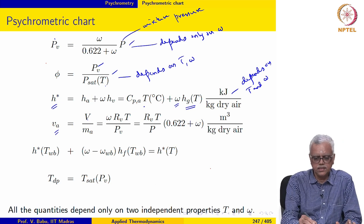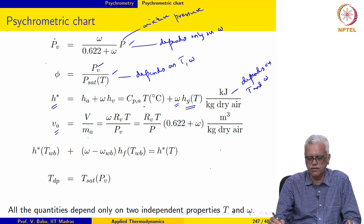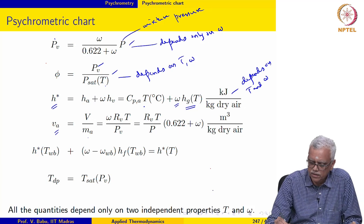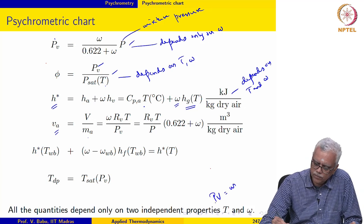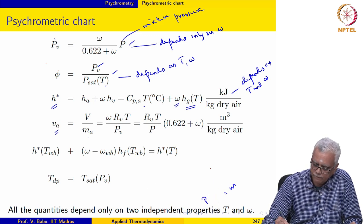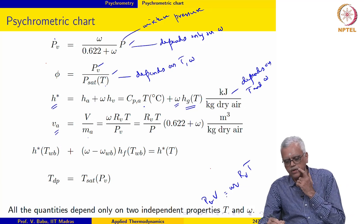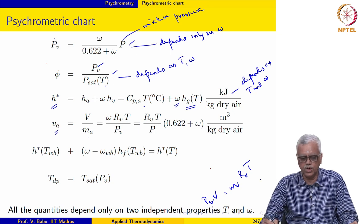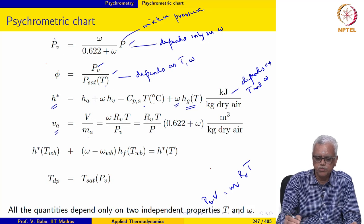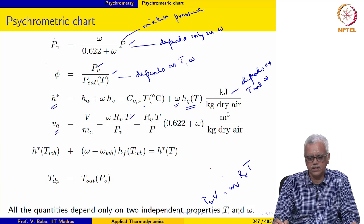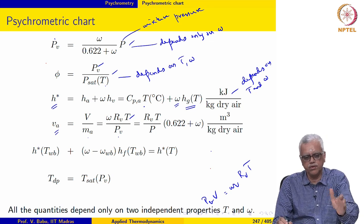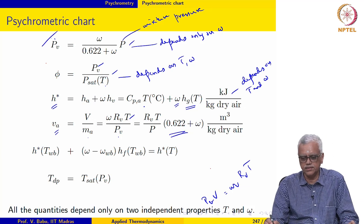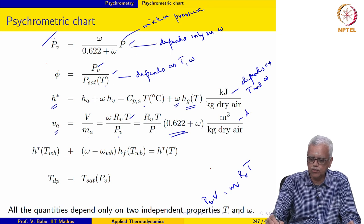The specific volume of dry air is nothing but the volume of the mixture divided by mass of dry air. The volume of mixture may be written using the water vapor: partial pressure of water vapor times volume of mixture equals MV times RV times T. So V itself may be written in terms of the mass of vapor and partial pressure of water vapor, which simplifies to omega times RV times T over PV. Replacing PV in terms of omega using the earlier relationship, VA depends clearly on T and omega.